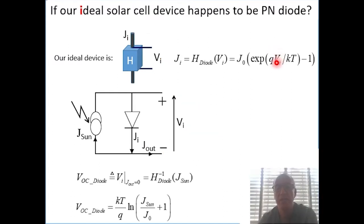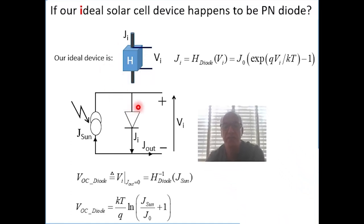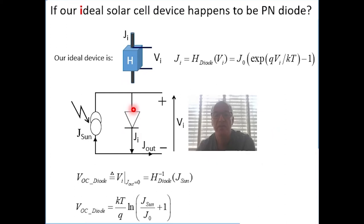Now let's make a very first and basic assumption already appearing in the title of the paper: we assume that the device we are going to study is a PN junction diode. So we really replace this arbitrary device shape with the symbol of a diode, and since it's a diode, we know its characteristics — the relation between the current and the voltage of an ideal PN diode.